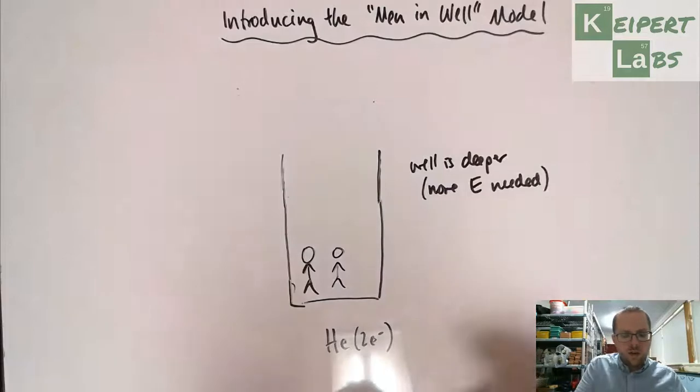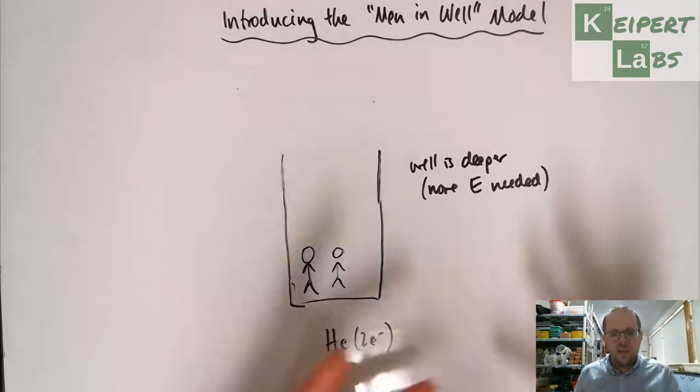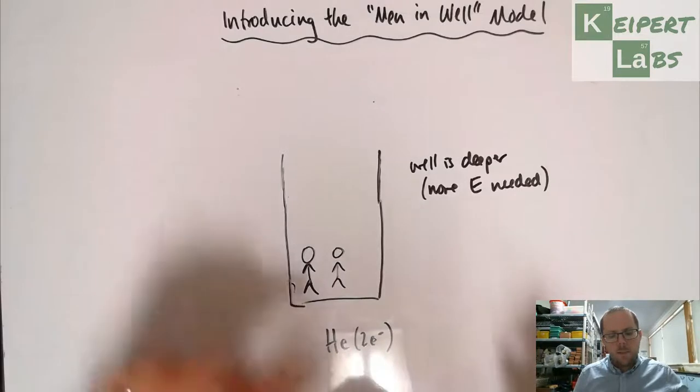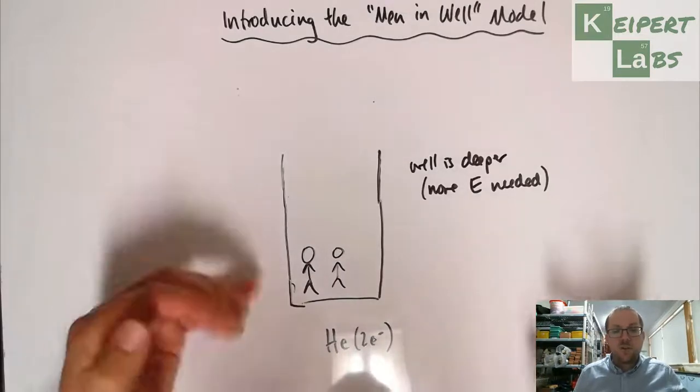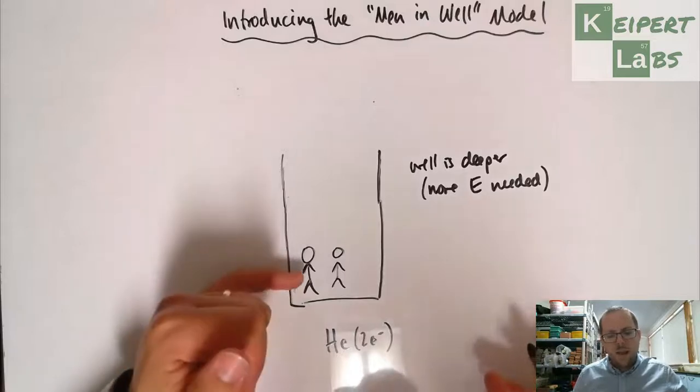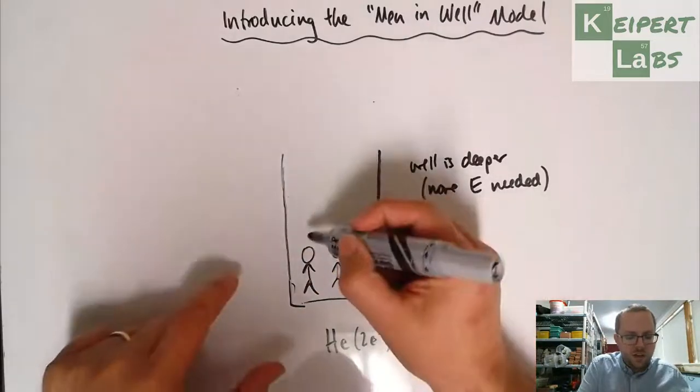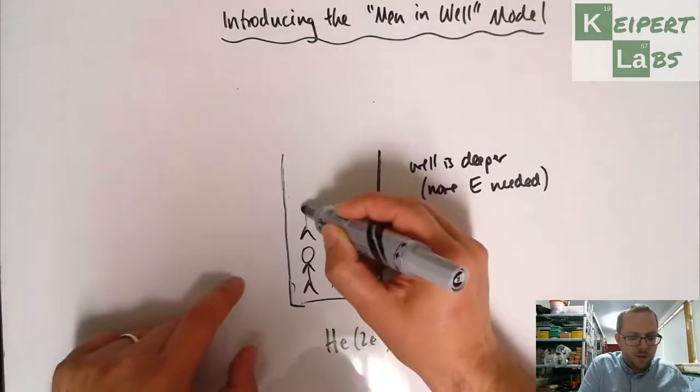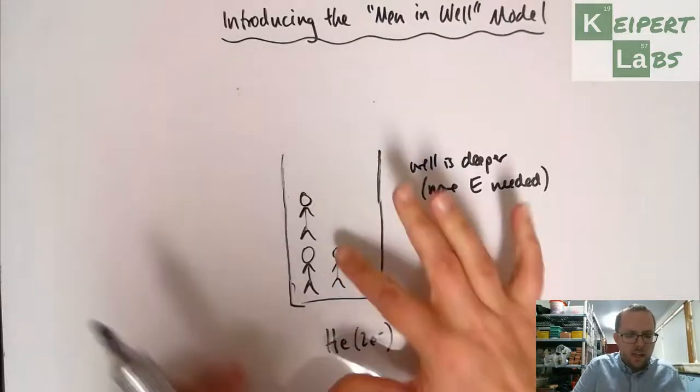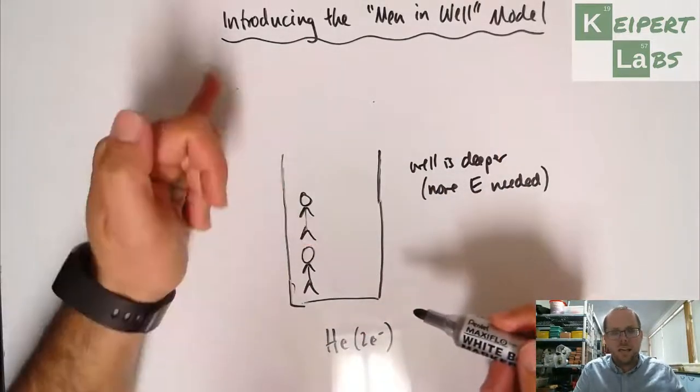Now how can we use this concept to account for the fact that one electron is easier to remove than the other? So one is easier and then the last one is the hardest. Let's imagine this like you had two men actually stuck down the well. The idea is that one man can help boost the other one to be a bit closer. If you forgive my fairly rubbish drawing skills, imagine that he could actually boost that man up to get him closer to the surface to make it easier to get out.